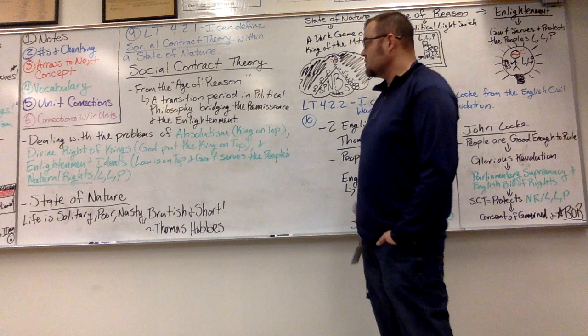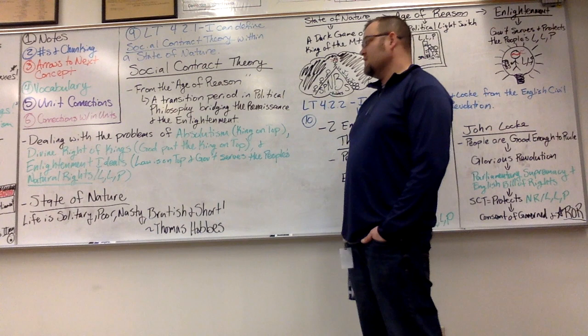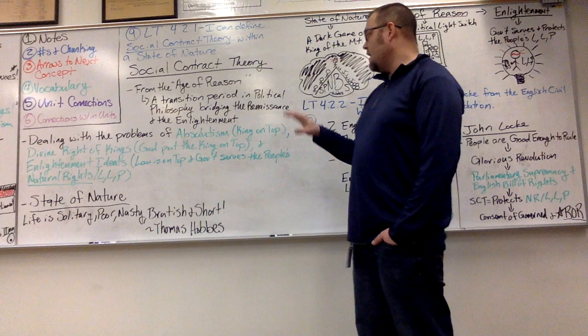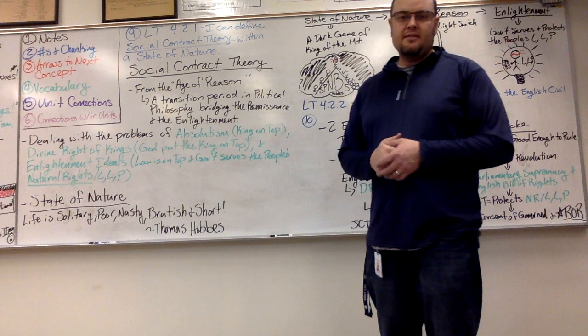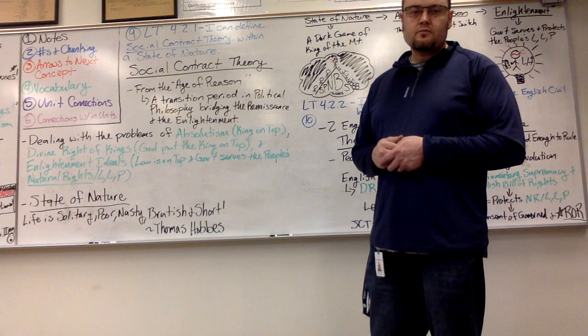Social contract theory comes from this time period called the Age of Reason. The Age of Reason is really a transition period in political philosophy, and it bridges from the Renaissance to a period of time called the Enlightenment, right around the same time as the American Revolution. We're kind of in limbo here, learning some new things and rolling out in the 1600s.